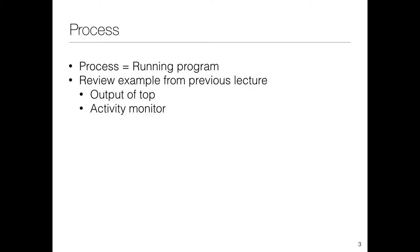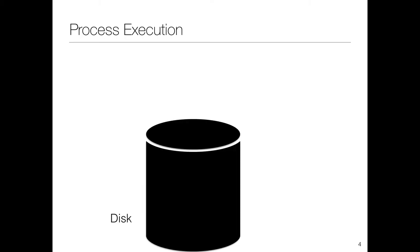Let's start with CPU virtualization and the first abstraction, which is the process. A process is a very simple concept — it's just a program which is running. A program is what you write, like a C program; when it's being executed it's called a process. We discussed examples like running Keynote or Pages — those are also examples of processes being converted from programs.